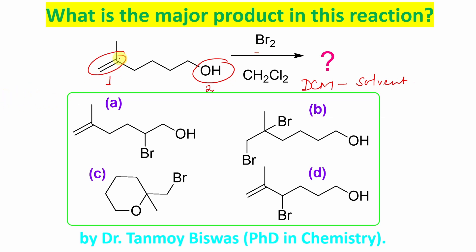Second point: how will this alkene react with bromine? Remember, alkenes have a pi bond. Pi bonds are made by parallel or sidewise overlap of p orbitals. They are not that much stronger compared to sigma bonds, because in sigma bonds the electron density remains exactly in between the two nuclei — strongly attracted by the two nuclei, so more stable. That's the reason why the pi bond reacts and results in a sigma bond.